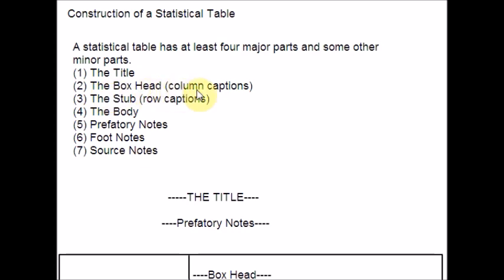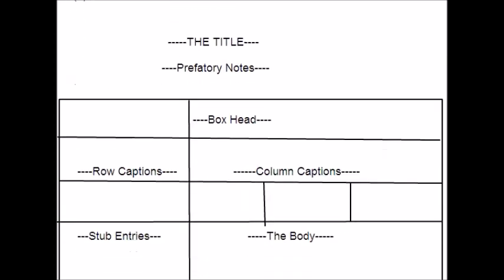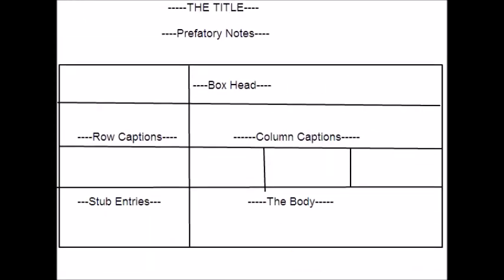Now let us see what is the box head, which is nothing but column captions. The vertical headings and subheadings are called box head, also known as column caption. The space where the column headings are written is called the box head. Only the first letter of the box head should be written in capital and the remaining letters in small. These are the column captions, and the first letter should be in capital while all other letters are in lowercase.